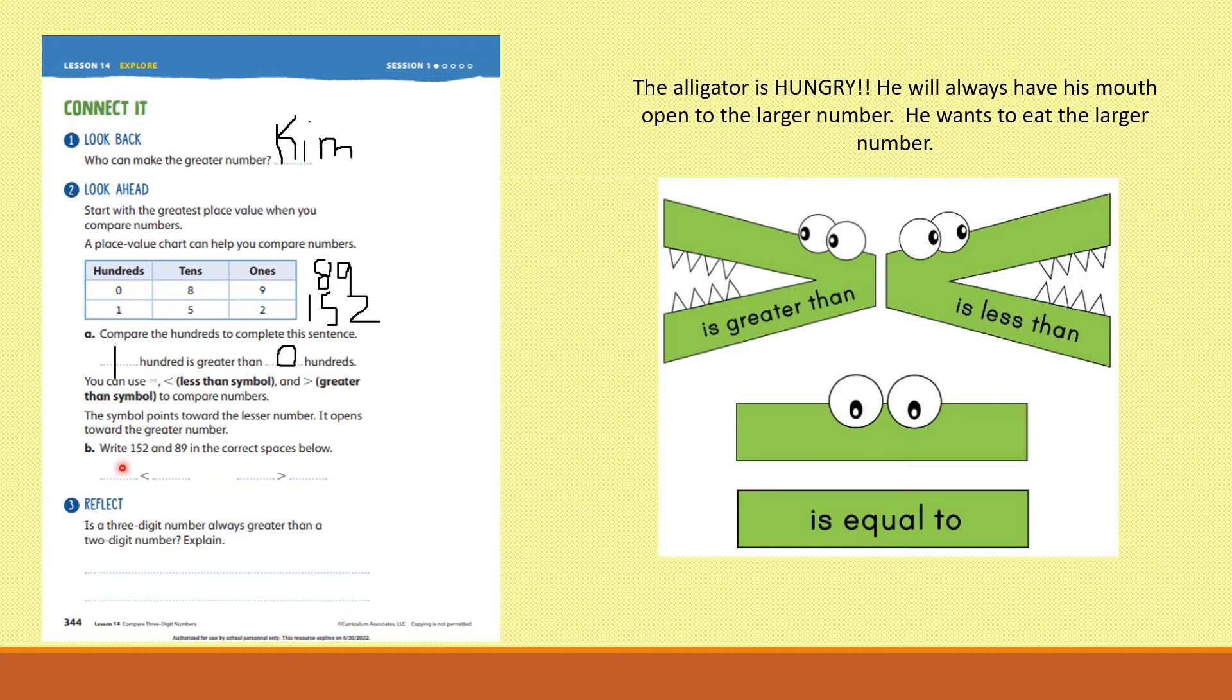It says, write one hundred and fifty-two and eighty-nine in the correct spaces below. Now, look at the arrow here. It's open here. What number needs to go right here? The alligator's mouth is open. So, what number needs to go there? The greater number, the bigger number. So, I have to put one hundred and fifty-two here.